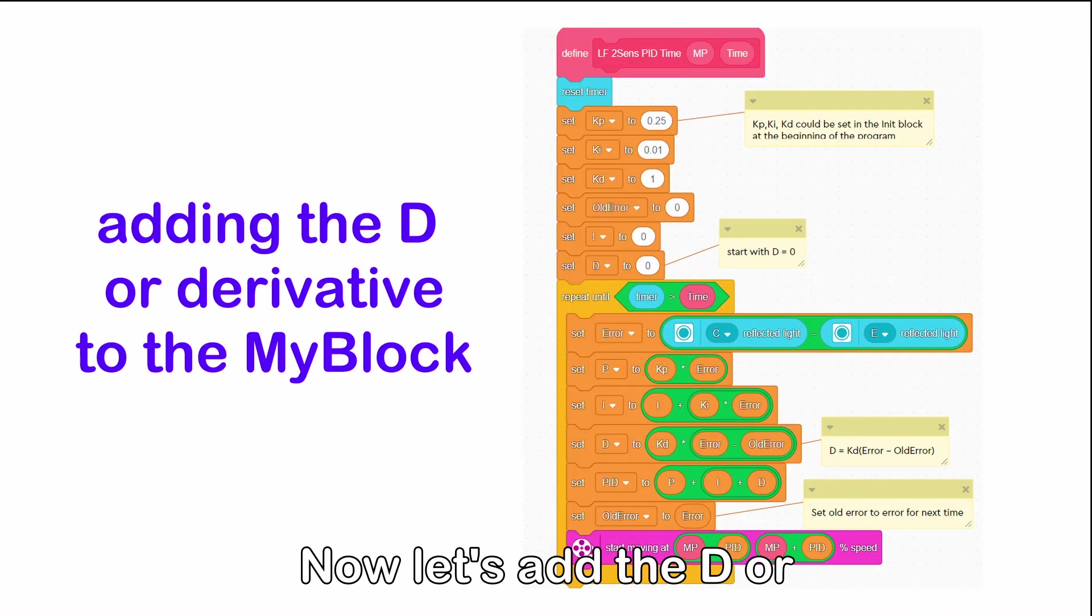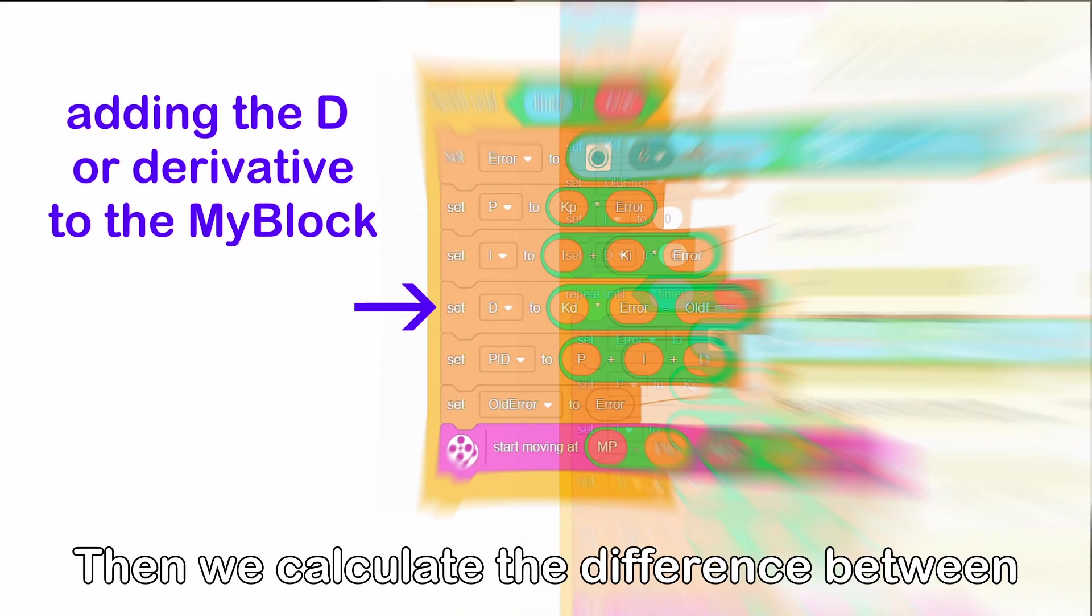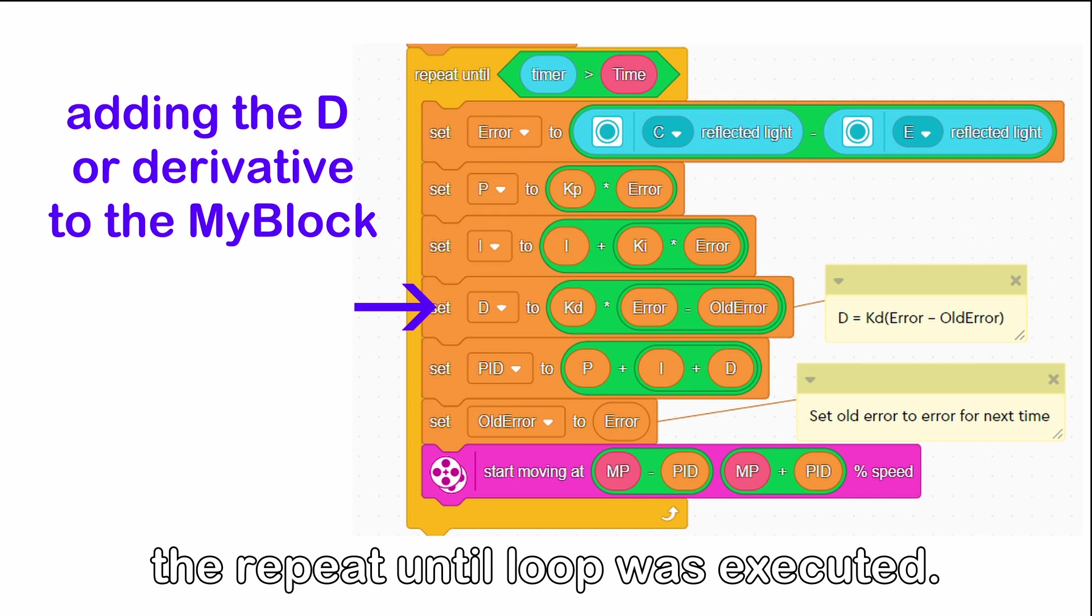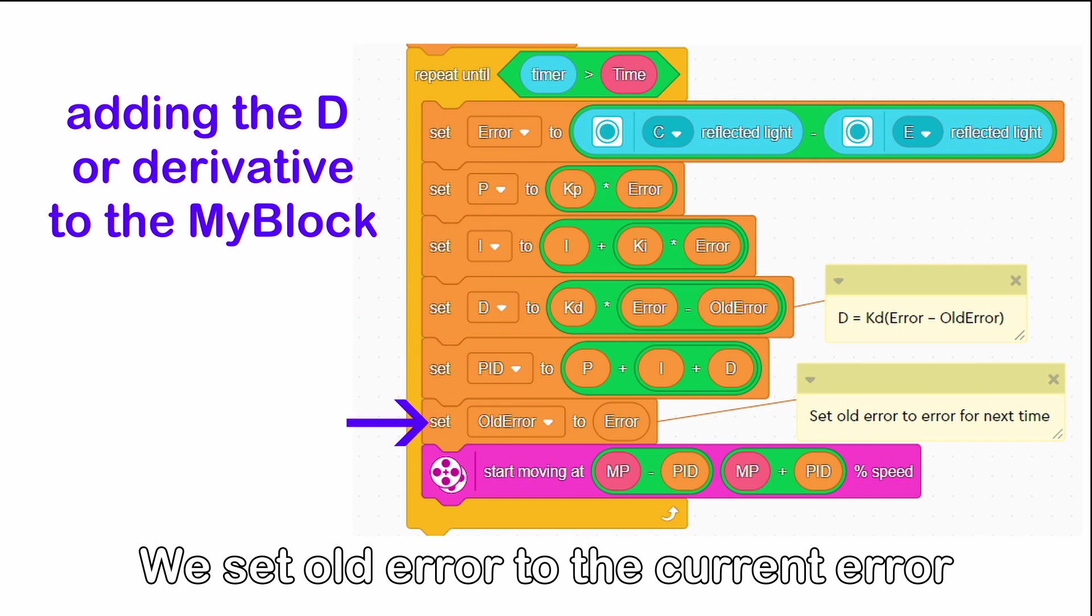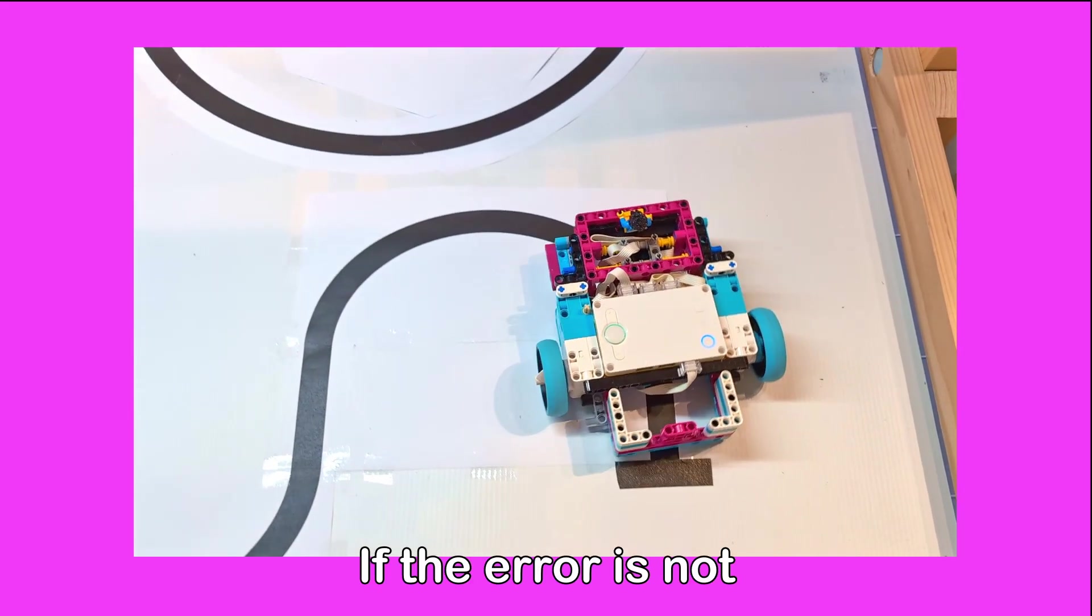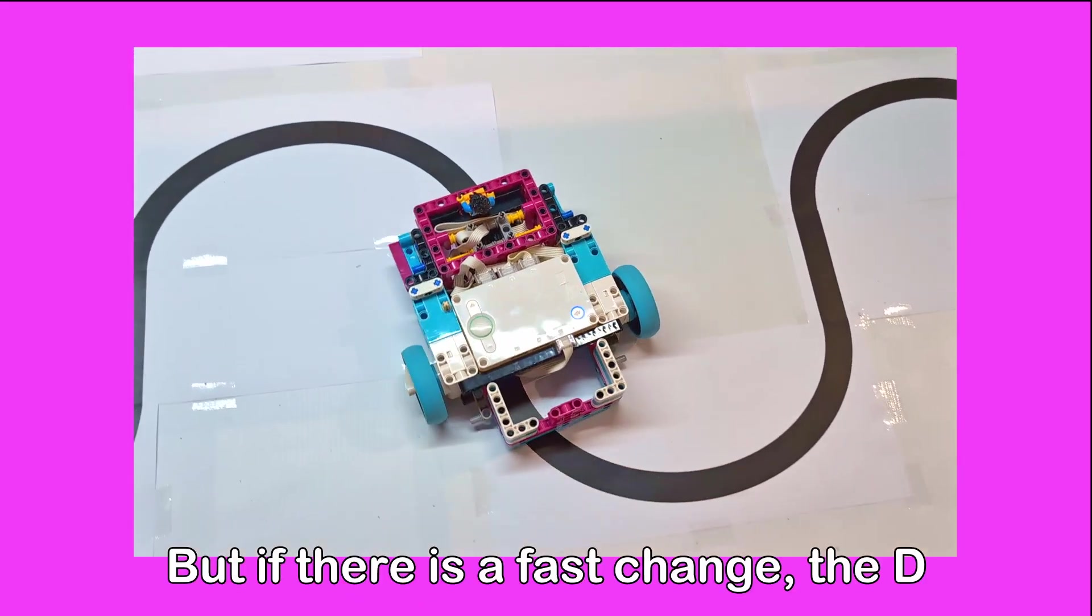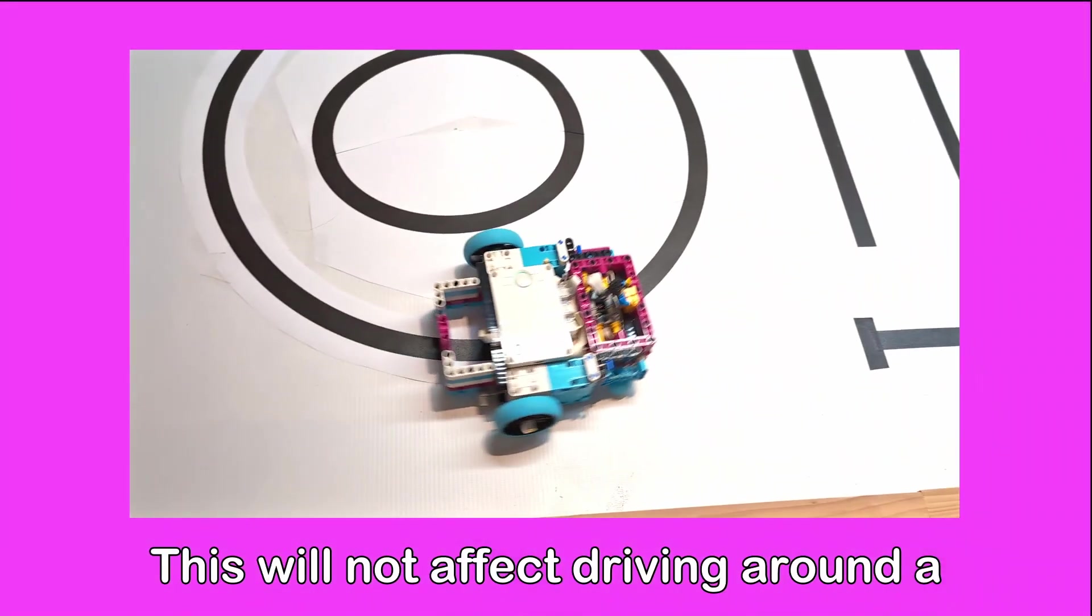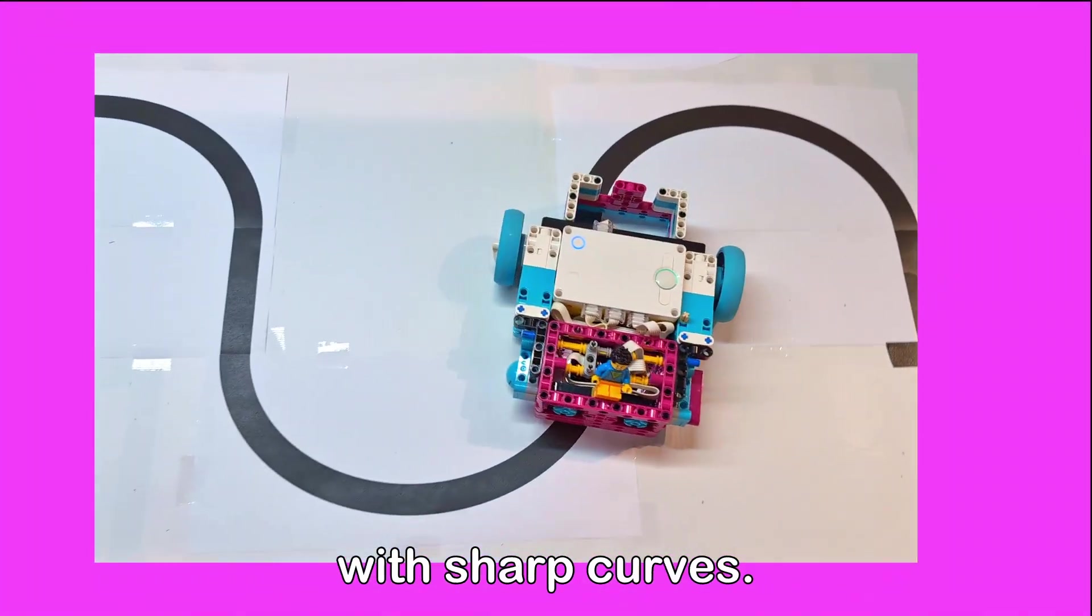Now let's add the D or derivative to the my block. The D value is first set to 0. Then we calculate the difference between the error we have now and the error last time the repeat until loop was executed. This gives us the rate of change of the error. We set old error to the current error ready for the next time. If the error is not changing, the D value is 0. But if there is a fast change, the D value will cause the robot to react strongly. This will not affect driving around a circle where the error is constant, but should help with sharp curves.